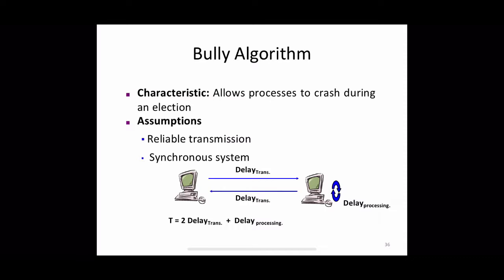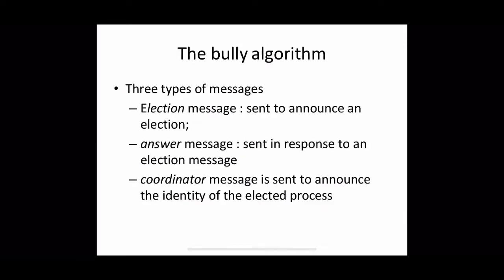Now let us see how this algorithm works. Before that, there are three different types of messages in the bully algorithm. The first is an election message, which is sent to announce an election. The second is an answer message, which is sent in response to an election message. The third is a coordinator message, which is sent to announce the identity of the elected process — that is, the new coordinator. Any process can begin an election when it notices through timeouts that the coordinator has failed, and several processes may discover this concurrently.